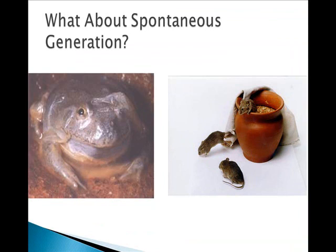Classical notions of abiogenesis held that complex living organisms are generated by decaying organic substances. This started with Aristotle, and he said that it was a readily observable truth that aphids arise from the dew which falls on plants, fleas from putrid matter, mice from dirty hay, crocodiles from rotting logs at the bottom of bodies of water. Many believed that frogs, for example, were generated from the muddy water that they were found in as well.